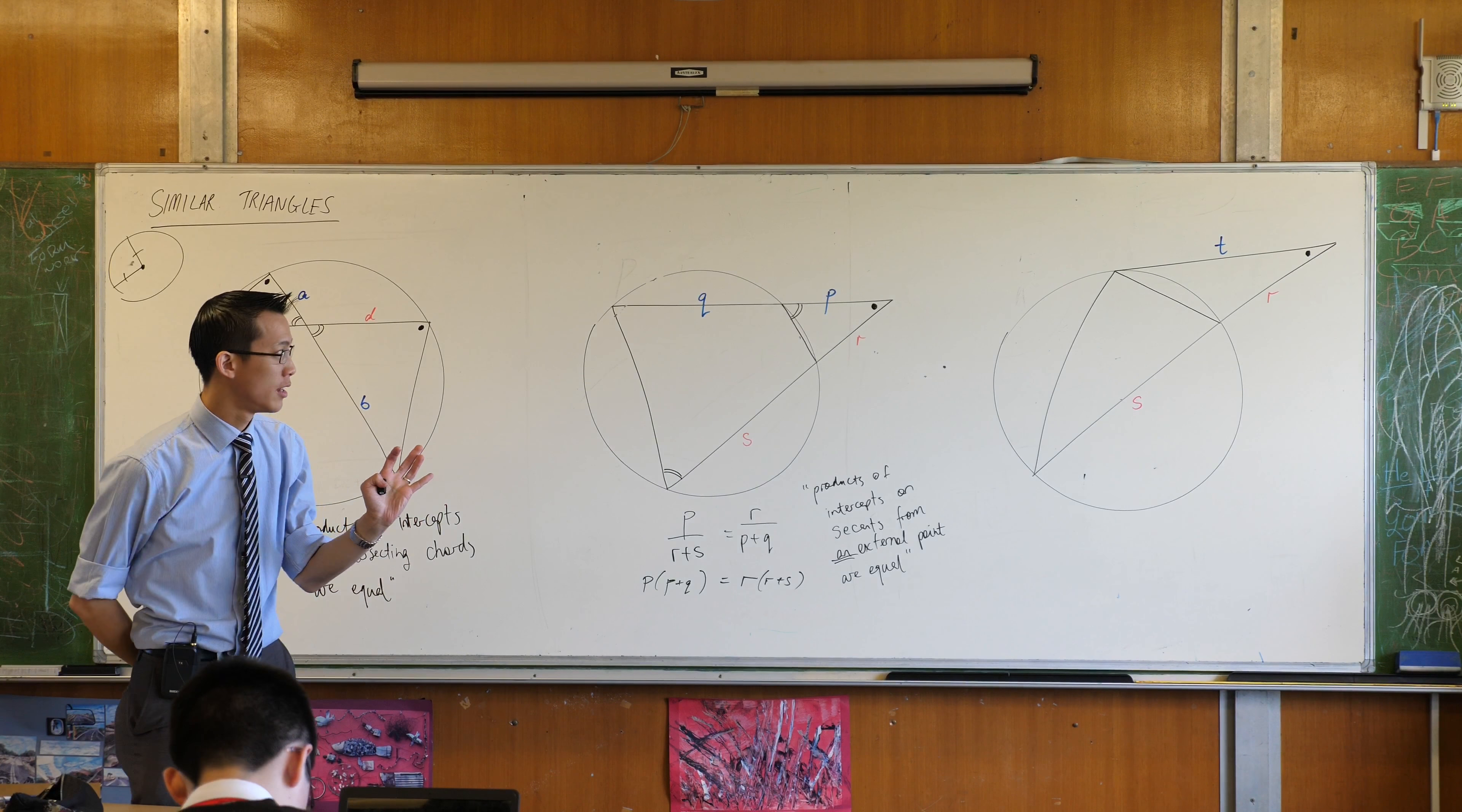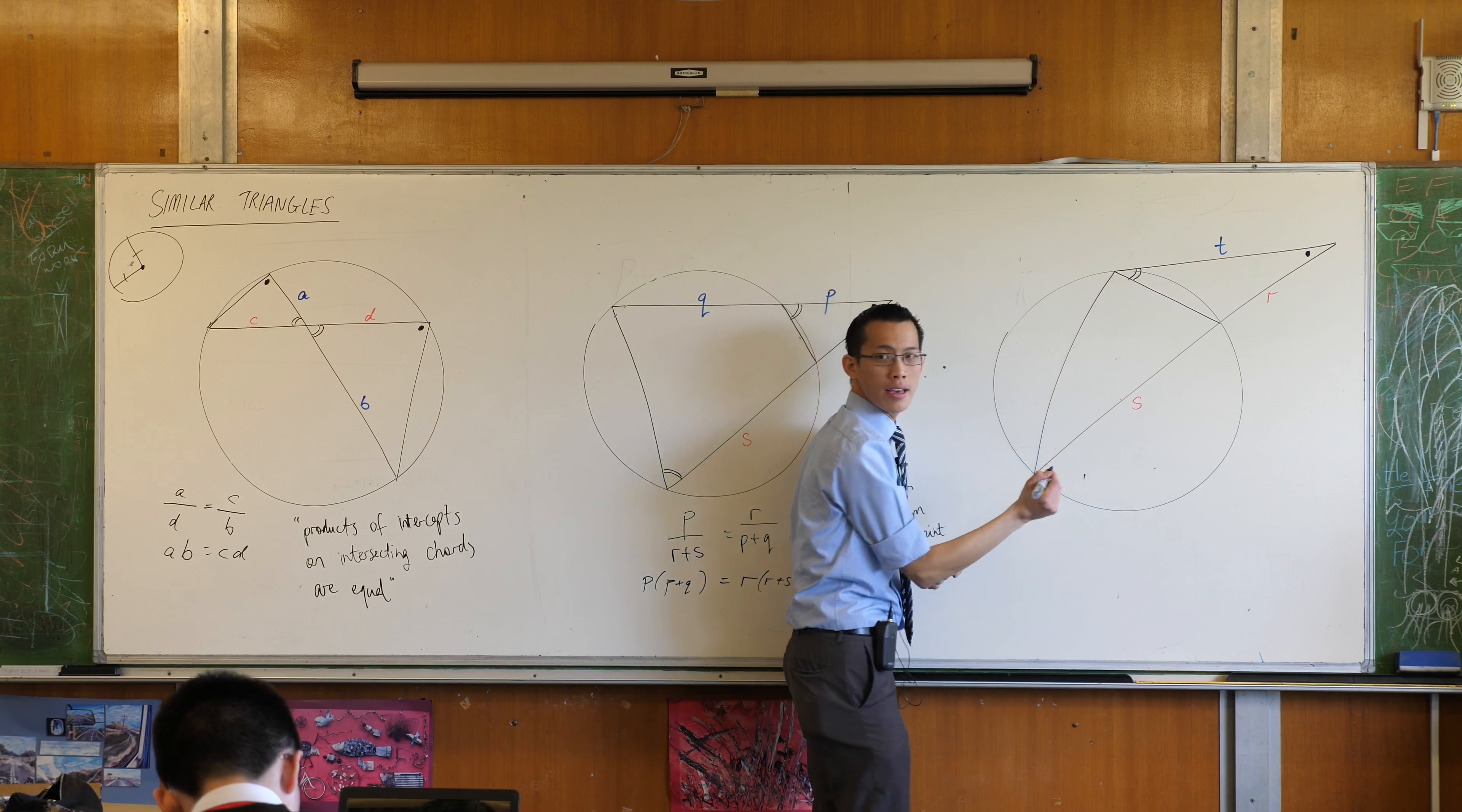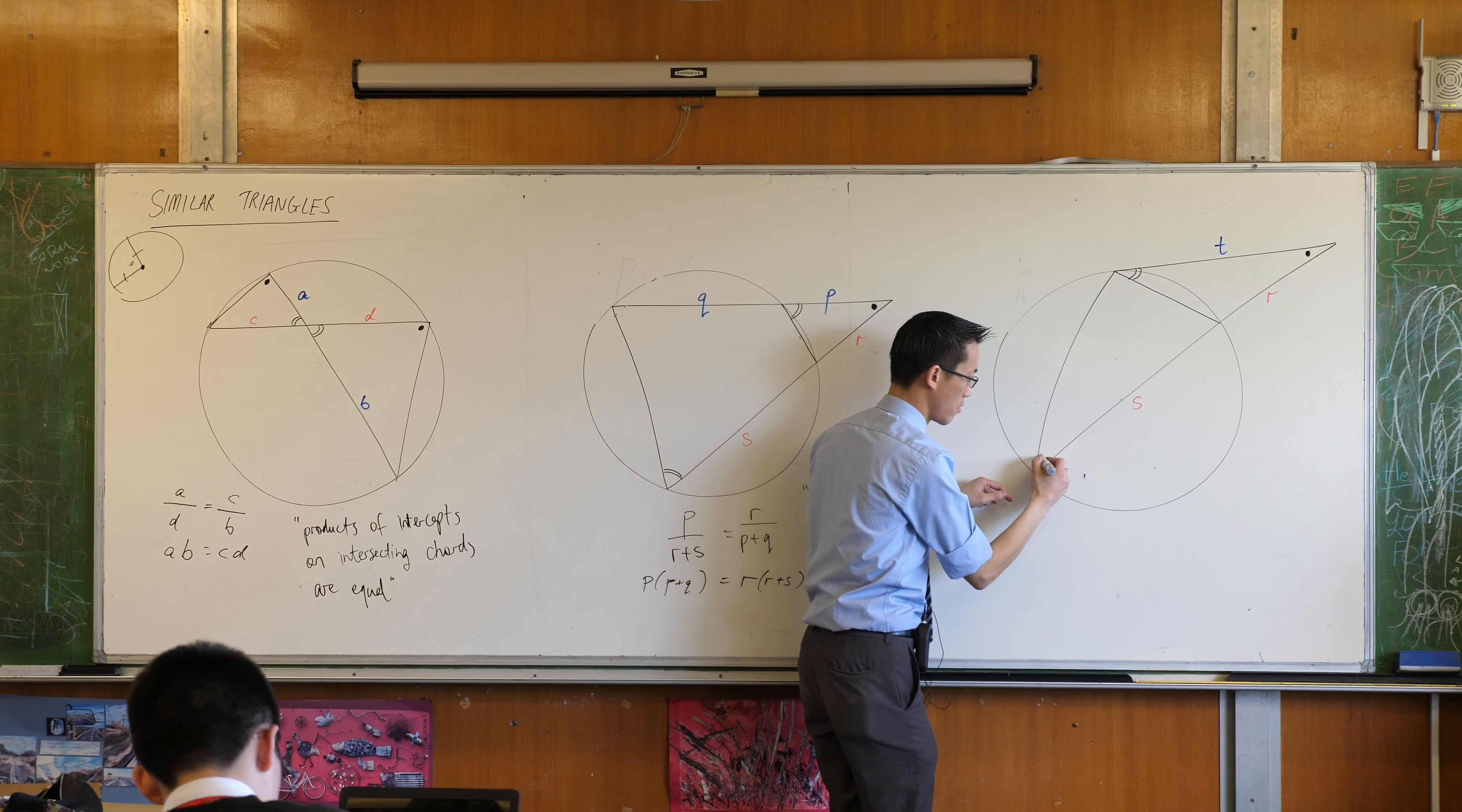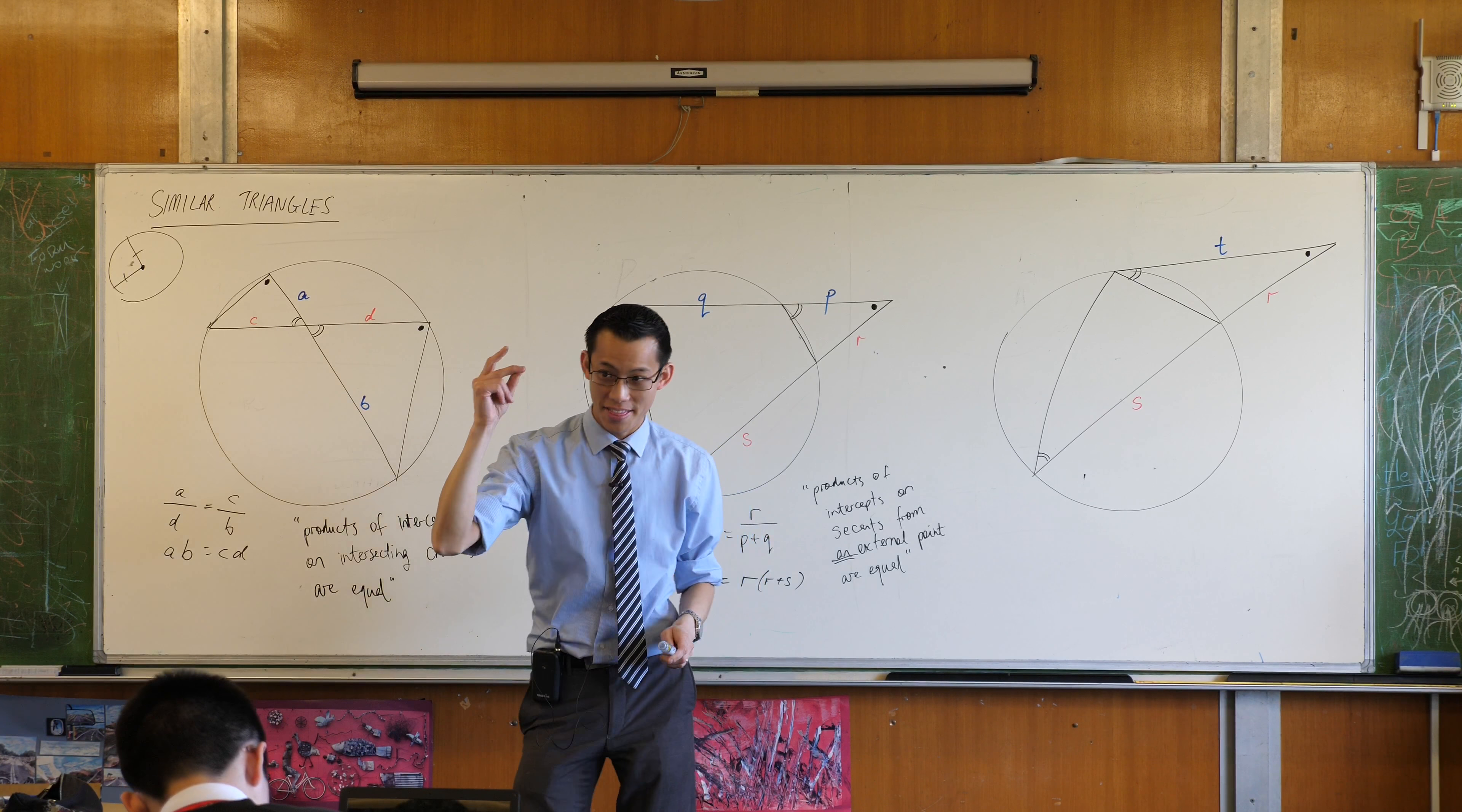Instead if you look at where those angles are, we're contending that this guy should be equal to this one down here in the bottom. It's not a cyclic quad so what are you going to say? The angle in the alternate segment which we just looked at this morning is this guy because look: tangent, chord of contact, and then over here you've got the big alternate segment over here. So for a different reason it's still the same.